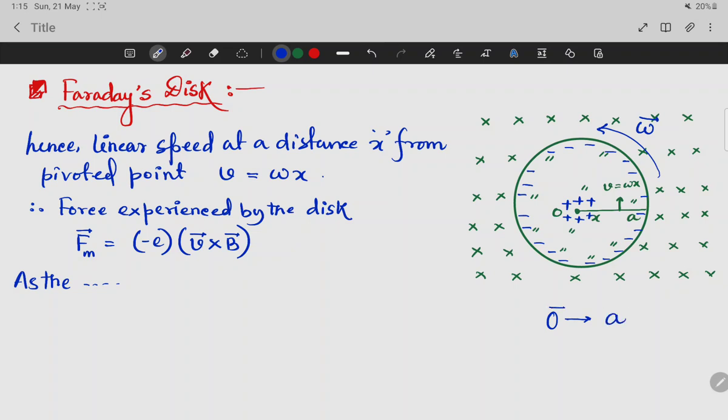O to a. O to a means from center to circumference. That is, electric field produced. Therefore, the electrostatic force on those electrons is this.